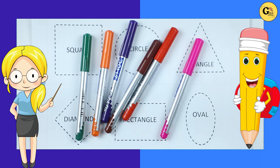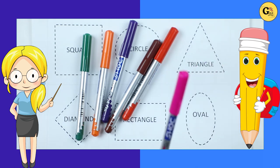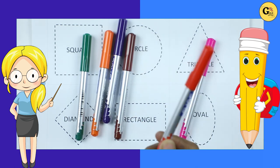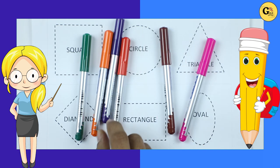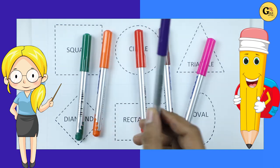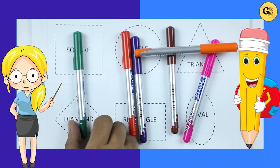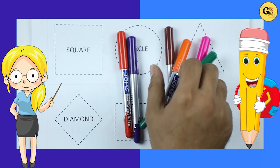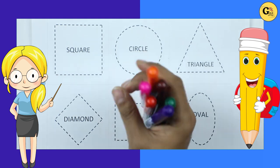We learn shapes with some colors. It's pink color, red color, brown color, purple color, orange color, green color. So let's start — learn shapes.